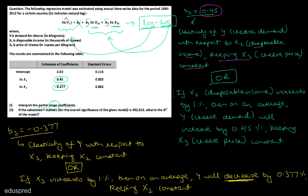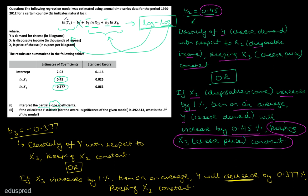Because we are working with a multiple linear regression model, we have to keep the other independent variables constant — that means keeping X3, cheese price, constant. In other words, if X2 increases by 1%, then on average, Y will increase by 0.45%, keeping X3 constant. Similarly, B3 equals minus 0.377, showing the elasticity of Y with respect to X3, keeping X2 constant.